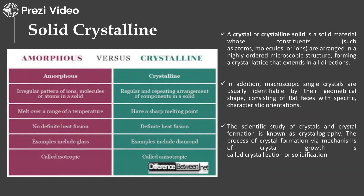Crystalline substances are solid materials in which the atoms, molecules and ions are organized in a highly organized structure with a defined crystal lattice. They have a repetitive arrangement and the highest forces of attraction among molecules; therefore the solids have high integrity and melt at a specific temperature. Macroscopic single crystals are identified by geometrical shapes consisting of flat faces with a specific characteristic orientation. The scientific study of crystals and crystal formation is known as crystallography, and the process of crystal formation via mechanisms of crystal growth is called crystallization or solidification.